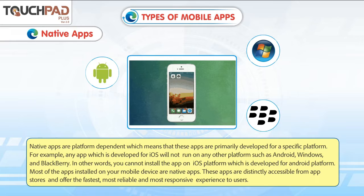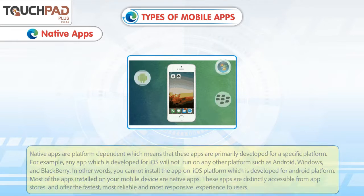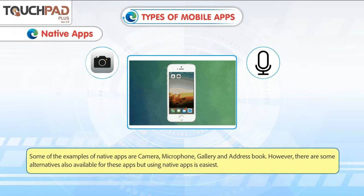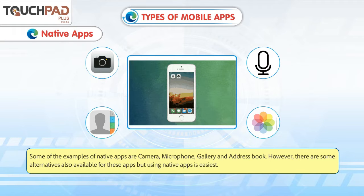These apps are distinctly accessible from app stores and offer the fastest, most reliable and most responsive experience to users. Some of the examples of native apps are camera, microphone, gallery and address book. However, there are some alternatives also available for these apps but using native apps is easiest.